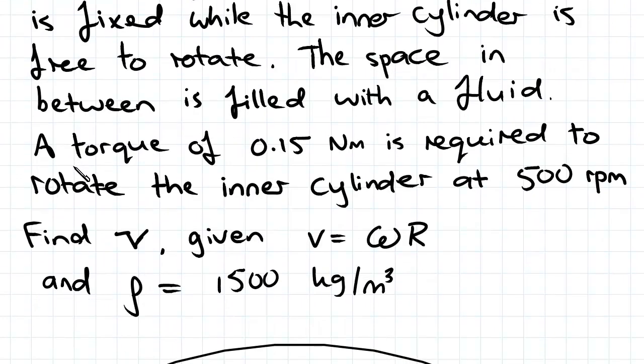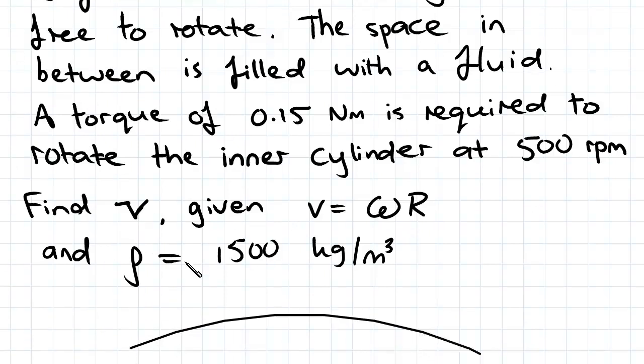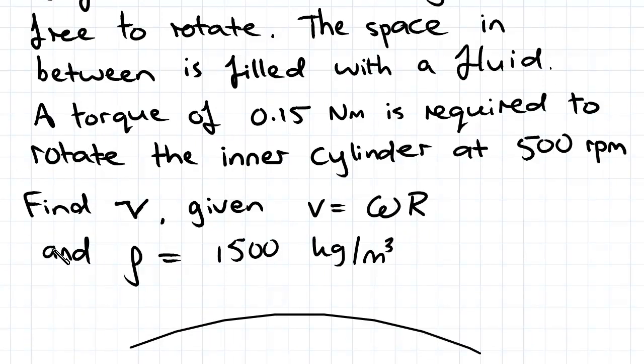We're asked to find the kinematic viscosity given that the velocity equals the angular velocity times the radius. So this omega here is angular velocity and we're given a density. We're going to need to find the dynamic or absolute viscosity before we can find the kinematic viscosity.